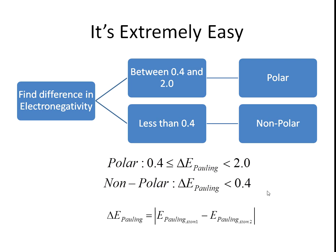Just to be absolutely clear, the way you find the difference in electronegativity is you take the electronegativity of atom 1 and you subtract it from atom 2. These vertical lines simply mean always positive. So when you find the difference in electronegativity, this is always a positive number. For example, if you found the difference and you got minus 1, you might think it's a non-polar bond — that's wrong. You should turn that into a positive number. If you get a negative, just throw away the negative. So if you got minus 1, just make it 1, and that means you've got a polar bond. Always positive.